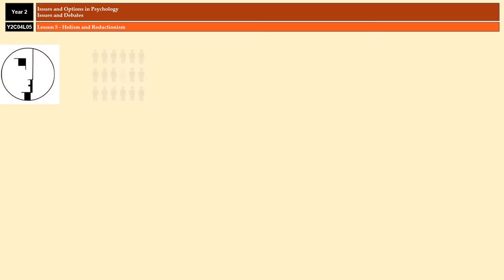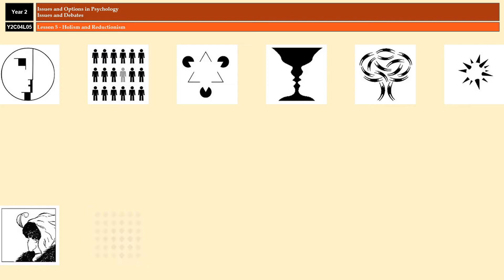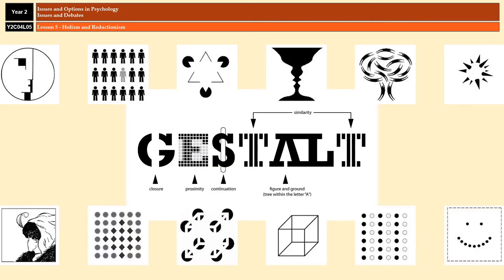There are tons more examples like that which illustrate how the brain takes a holistic approach. All of those are examples of how the brain will take all of the individual components and produce something that's different.